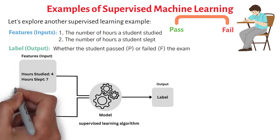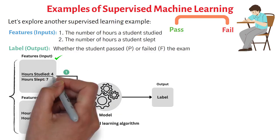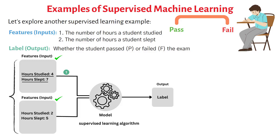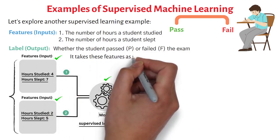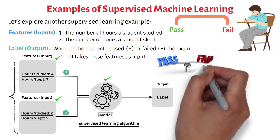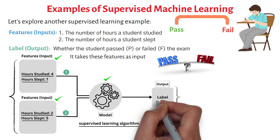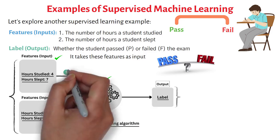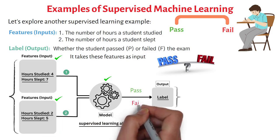On the left side, we have two examples of student features — inputs. The first student studied for 4 hours and slept for 7 hours. The second student studied for 2 hours and slept for 5 hours. In the middle, we have the model — our supervised learning algorithm. It takes these features as input and learns to predict whether a student will pass or fail the exam. On the right side, we have the output, which is the label or prediction. For the first student, the model predicts pass, and for the second student, it predicts fail.